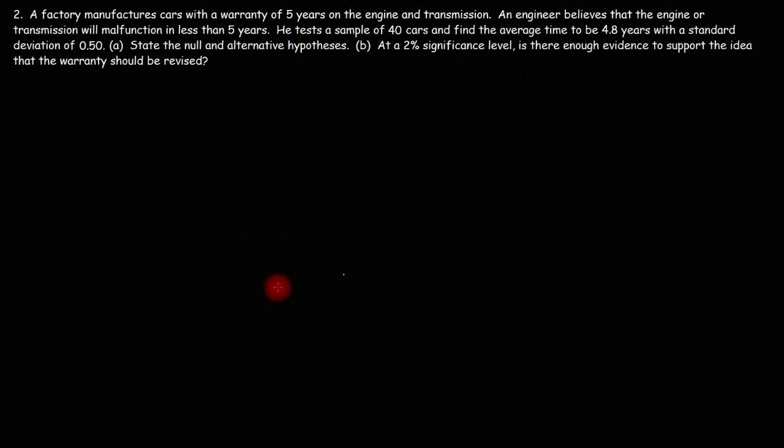Now let's work on number two. A factory manufactures cars with a warranty of five years on the engine and transmission. An engineer believes that the engine or transmission will malfunction in less than five years. He tests a sample of 40 cars and finds the average time to be 4.8 years with a standard deviation of 0.5. Part A: state the null and alternative hypotheses.